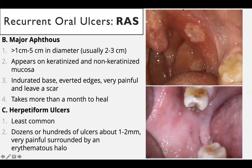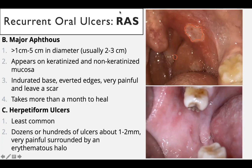Major aphthous ulcers are very painful and leave a scar after healing. Unlike minor ulcers which are round and uniform, major ulcers are irregular, not uniform, more painful with everted edges. They leave a scar after healing and take more than a month to heal — over 30 days. They are least common among the major subtypes.